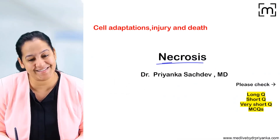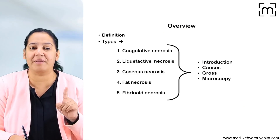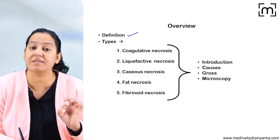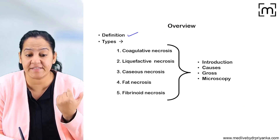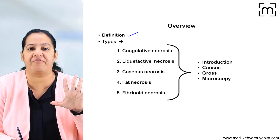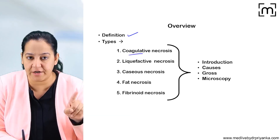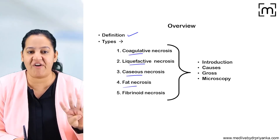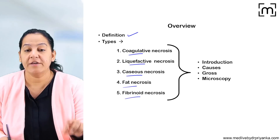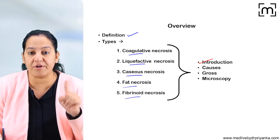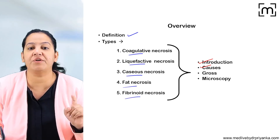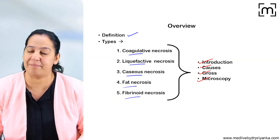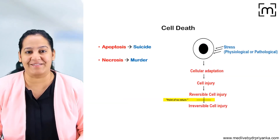First of all, I'm giving you the definition of necrosis — you should understand what necrosis is, define it, then tell me the five types: coagulative necrosis, liquefactive necrosis, caseous necrosis, fat necrosis, and fibrinoid necrosis. For each you have to cover the introduction, the causes, the gross appearance, and the microscopy.